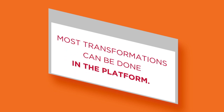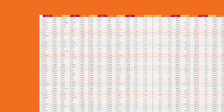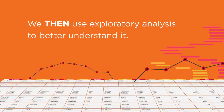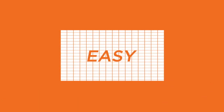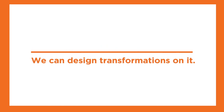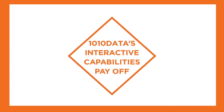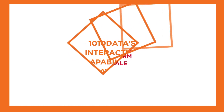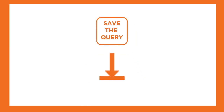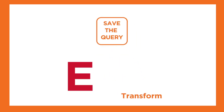Most transformations can be done in the platform. With ELT, we load data as is, without upfront data modeling. We then use exploratory analysis to better understand it. This is most helpful with large data — it's easy to understand a 15-record table, but much harder to understand a 10 billion record dataset. Once we've used the platform to understand the data, we can design transformations on it. 1010Data's interactive capabilities pay off as we prototype transformation at scale. When we find something we like, we save the query and incorporate it into the transform stage of ELT.